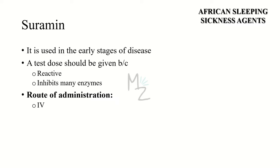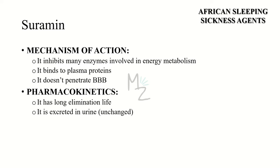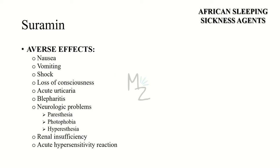Next is suramin, used primarily in the early stages of African sleeping sickness. As it is very reactive and inhibits many enzymes, a test dose is given prior to administration. Its route of administration is intravenous. Mechanism of action: it is very reactive and inhibits many enzymes, especially those involved in energy metabolism. It binds to plasma proteins and does not penetrate the blood-brain barrier (BBB). Its half-life is greater than 40 days and it is mainly excreted unchanged in urine. Adverse effects include nausea, vomiting, shock, loss of consciousness, acute urticaria, blepharitis, and neurologic problems such as paresthesia, photophobia, and hyperesthesia of the hands and feet. Renal insufficiency may occur but tends to resolve with discontinuation.